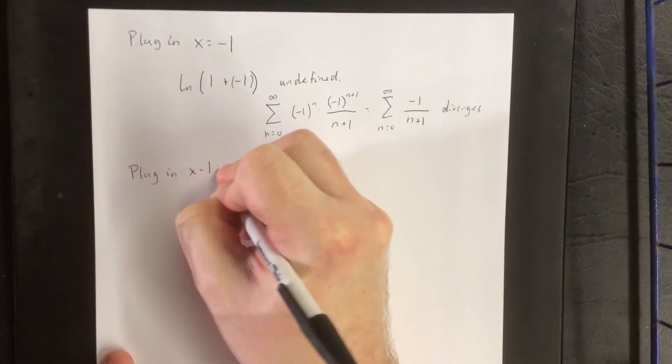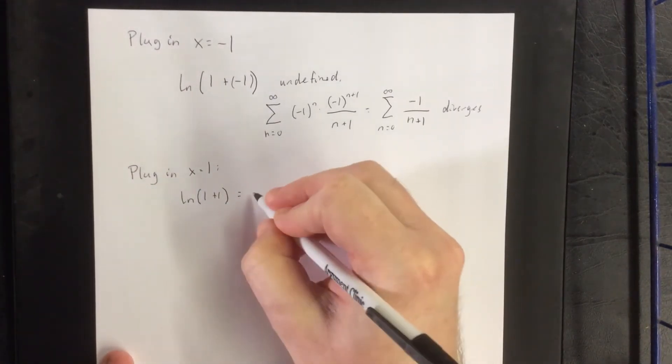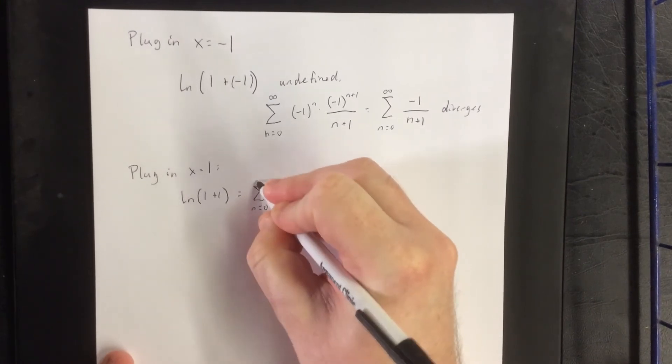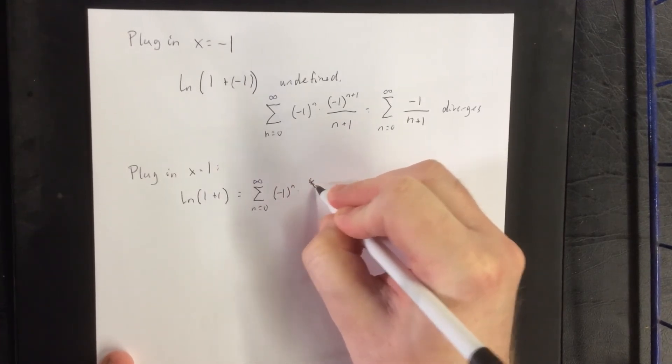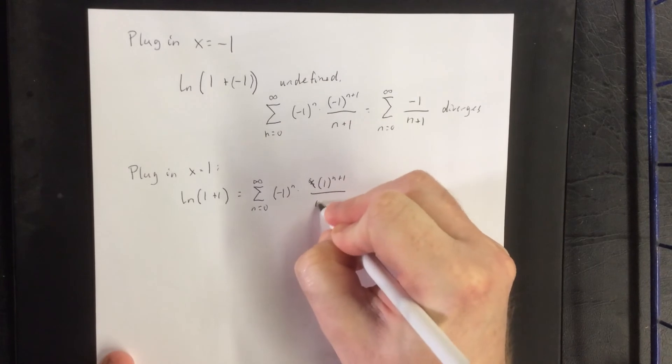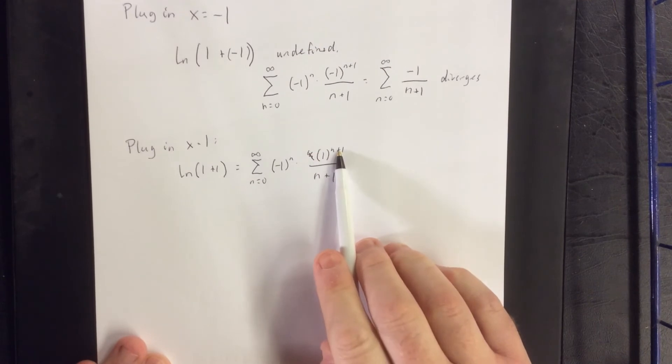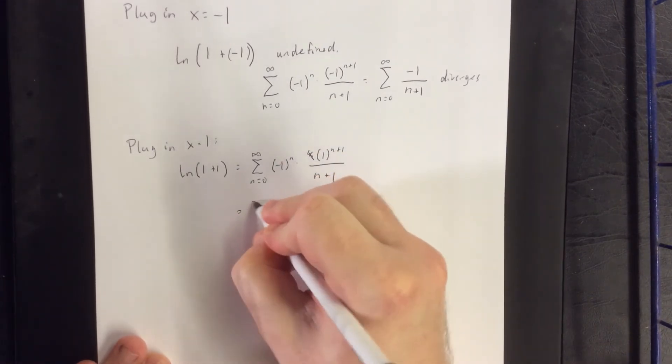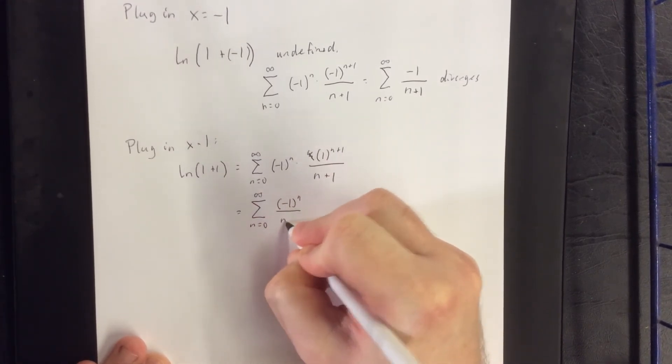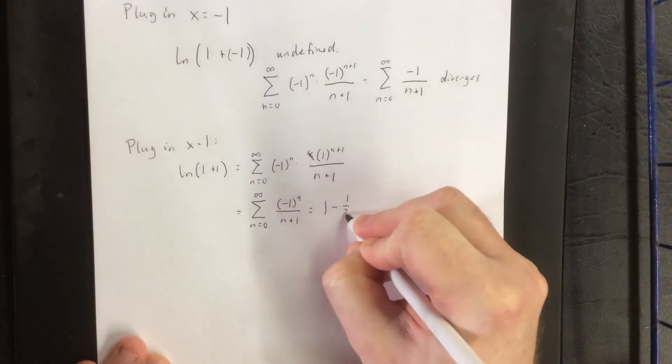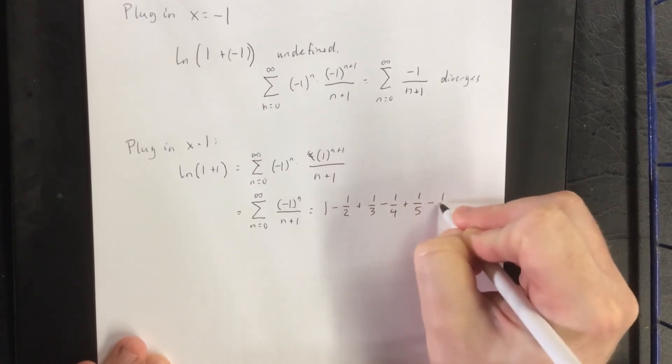However, if I plug in x equals positive 1, then the left hand side would become the natural log of 1 plus 1. The right hand side would become the sum from n equals 0 to infinity of negative 1 to the nth power times 1 to the n plus 1 power divided by n plus 1. 1 raised to any power is simply going to be 1. So what we're left with is negative 1 to the nth power over n plus 1. Plugging in a couple values gives us a very familiar series. This would be the alternating harmonic series.